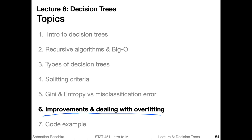In the next video, we will talk briefly about making improvements to the decision tree algorithm - some tricks to make it even better - and also about dealing with overfitting. If we grow a very tall tree by making many splits until the child nodes are pure, what can happen is that we overfit to the training set, meaning we may not perform well on new data because we memorize too much detail about the training set. In the next video, I will also briefly talk about how we can minimize or decrease the degree of overfitting.